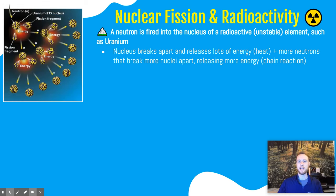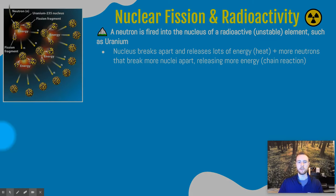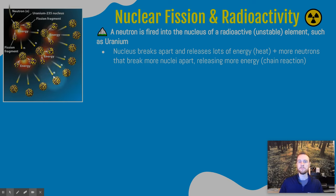Looking at a diagram of this to help us understand what's going on: we can see this initial neutron flying in hits this nucleus, which breaks it apart, releasing a lot of energy but also releasing more neutrons. These neutrons fly out, they hit other nuclei, break them apart, releasing more energy and more neutrons that hit more nuclei. So we have a chain reaction with tons and tons of energy being generated.